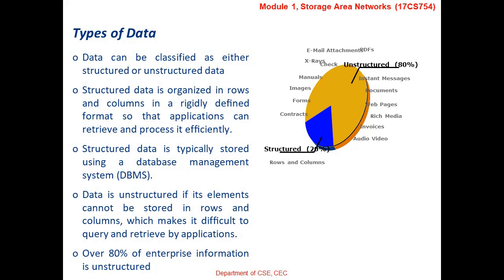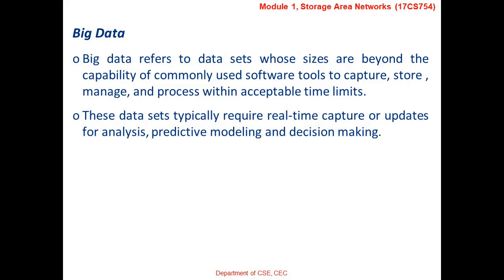More than 80% of the data in the digital universe is unstructured. Structured data contributes to less than 20%. Unstructured data may be audio, video, invoices, web pages, documents, instant messages, emails, manuals, x-rays and so on — all data which cannot be represented in rows and columns falls under unstructured data. Big data refers to data sets whose sizes are beyond the capability of commonly used software tools to capture, store, manage and process within acceptable time limits. These data sets typically require real-time capture or updates for analysis, predictive modeling and decision making.